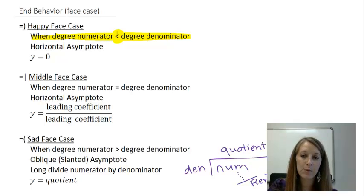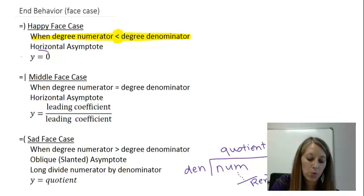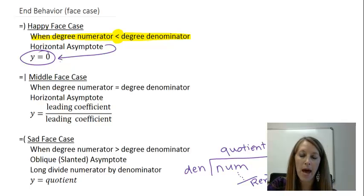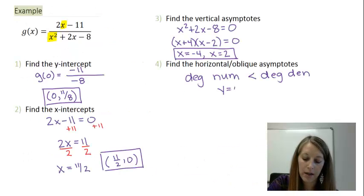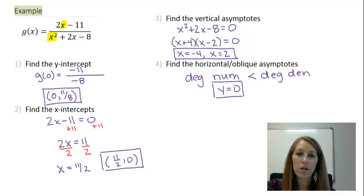We like the happy face case because we have absolutely no work to do. It's automatically given us our answer, which is y equals zero. That tells us we have a horizontal asymptote at y equals zero. These four are the most critical parts to determining how to graph a rational function. We need to plot these four things on the graph, and then see what we need to come up with past this.